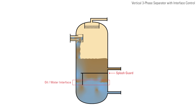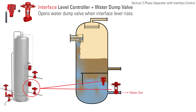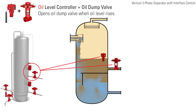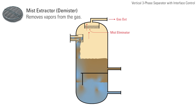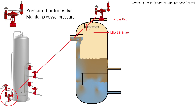As the oil separates, the interface level is determined. The interface level controller will open the water dump valve when the interface level rises. The oil level is also controlled by a liquid level controller, which will open the oil dump valve when the oil level rises. The gas travels to the top of the vessel through a mist extractor and a back pressure control valve, which maintains constant vessel pressure.